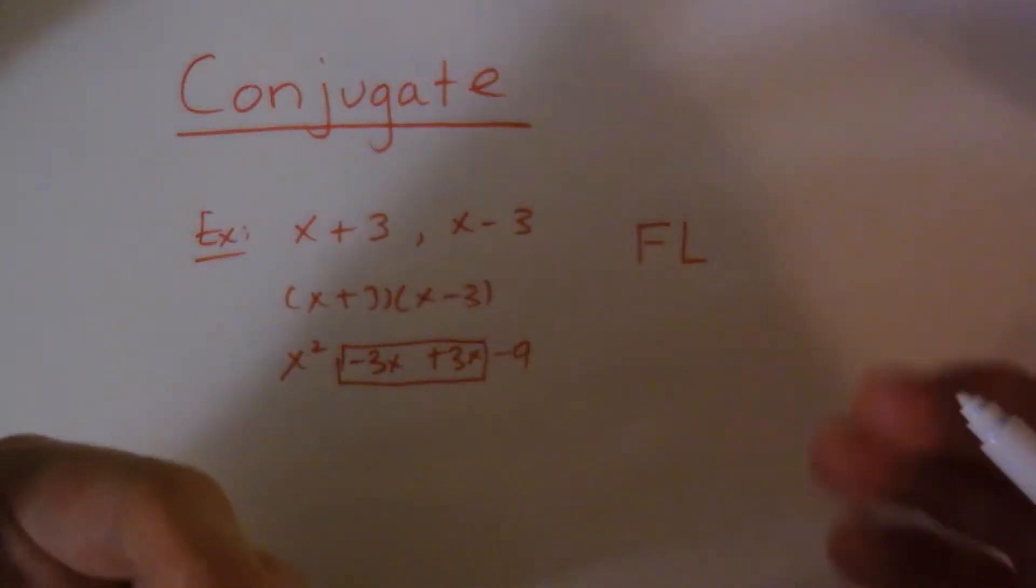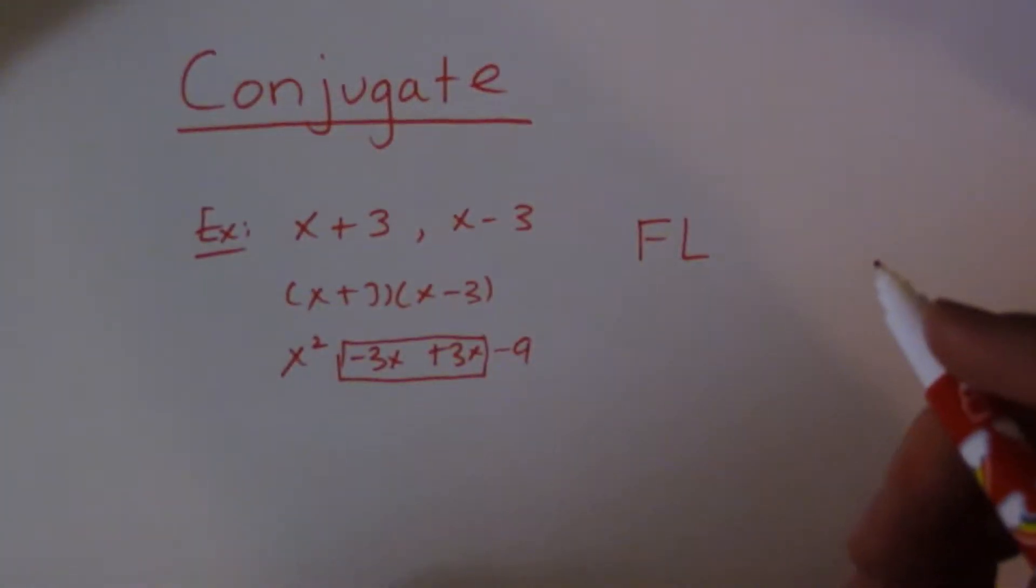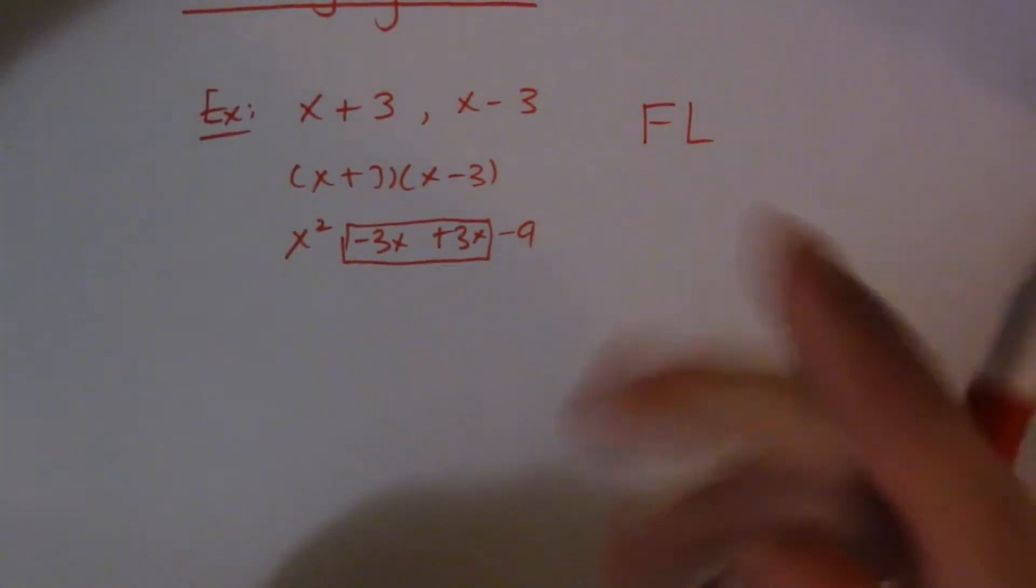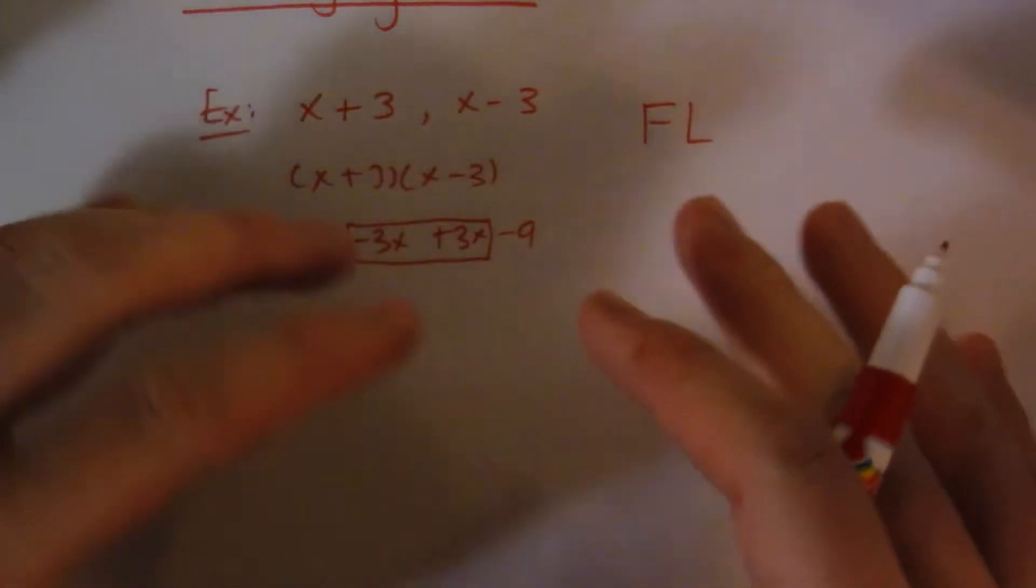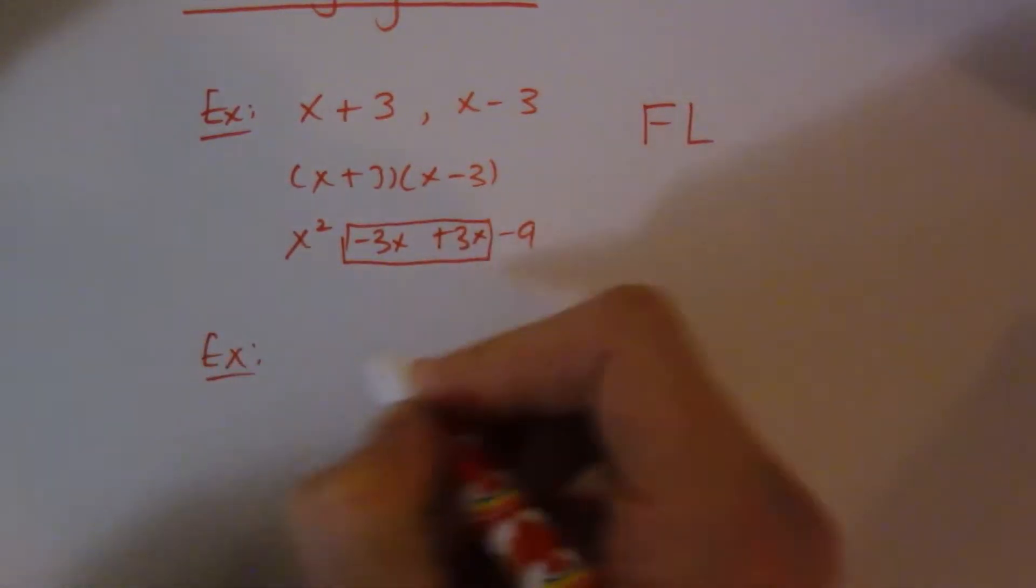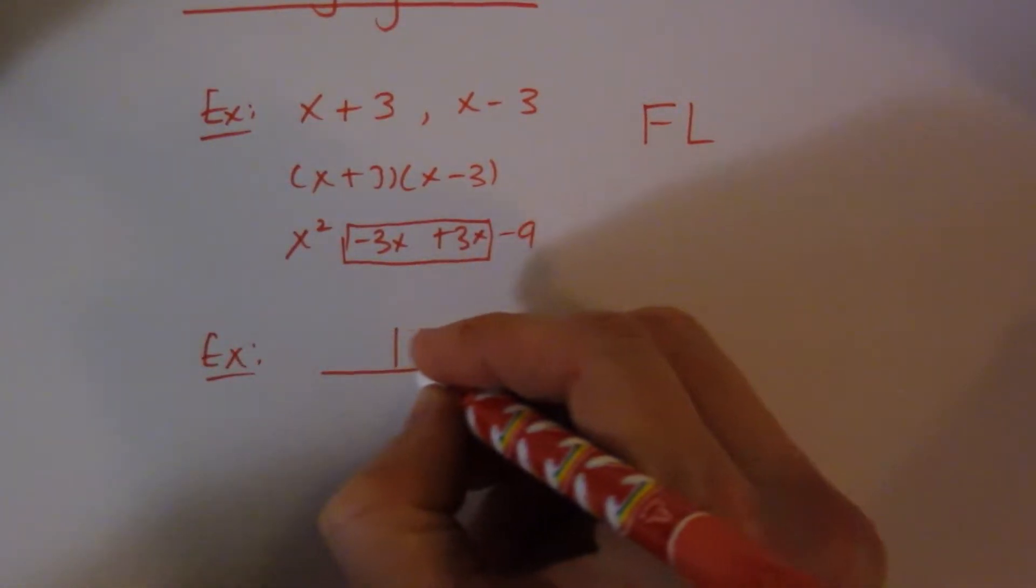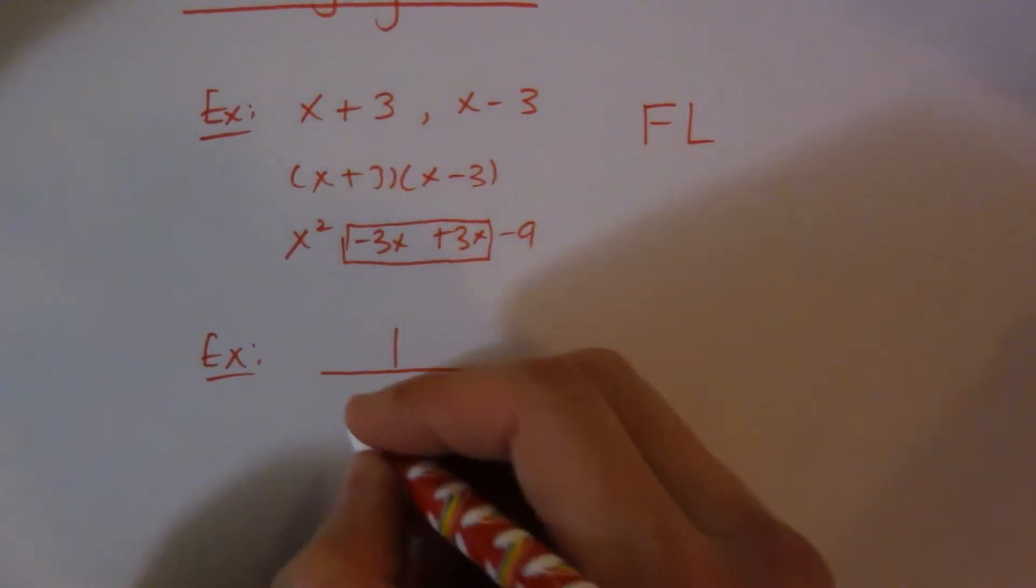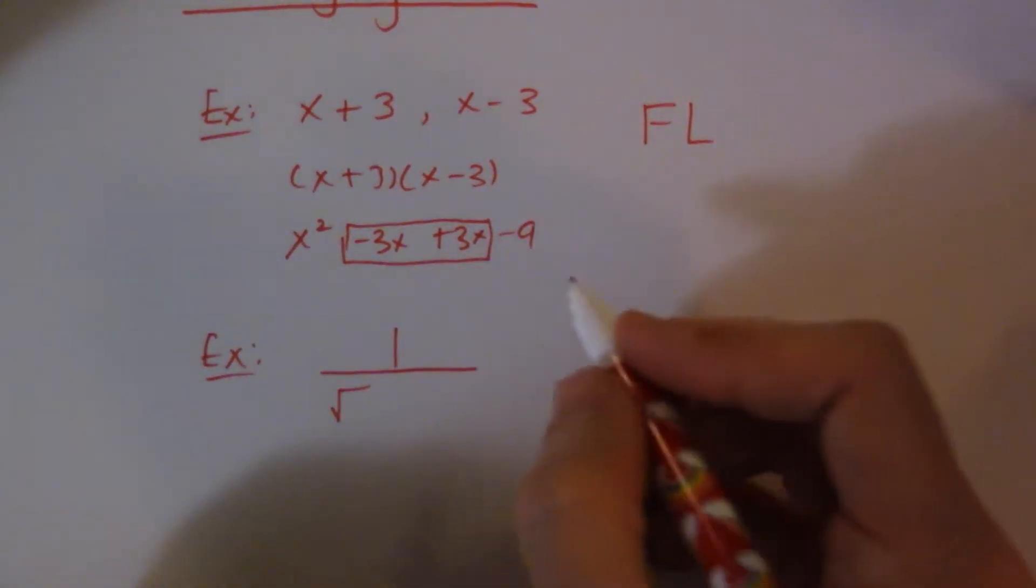So again, this is not necessarily a video for that. This is more just an explanation of what the conjugate is. Now, I'll give you one example. You want to use the conjugate any time you're dealing with an unsimplified irrational function.